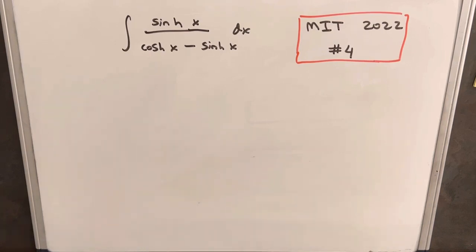Hey, we have an interesting problem here from the MIT Integration B 2022. This is problem number four. We need to integrate sinh x, that is hyperbolic sine of x, over cosh x minus sinh x.